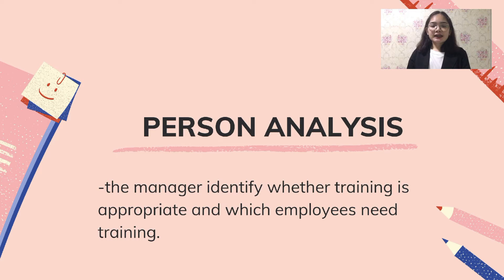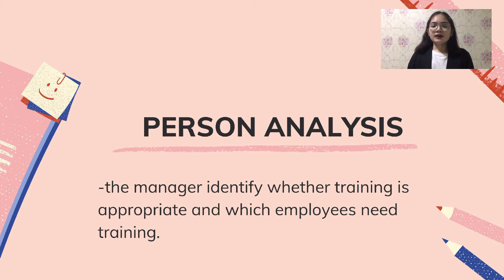Person analysis also helps determine employees' readiness for training. Readiness for training refers to whether employees have the personal characteristics — such as ability, attitudes, beliefs, and motivations — necessary to learn program content and apply it on the job, and whether the work environment will facilitate learning and not interfere with performance. This process includes evaluating a person's characteristics, input, output, consequence, and feedback. A major pressure point for training is poor or substandard performance — a gap between employees' current performance and their expected performance.